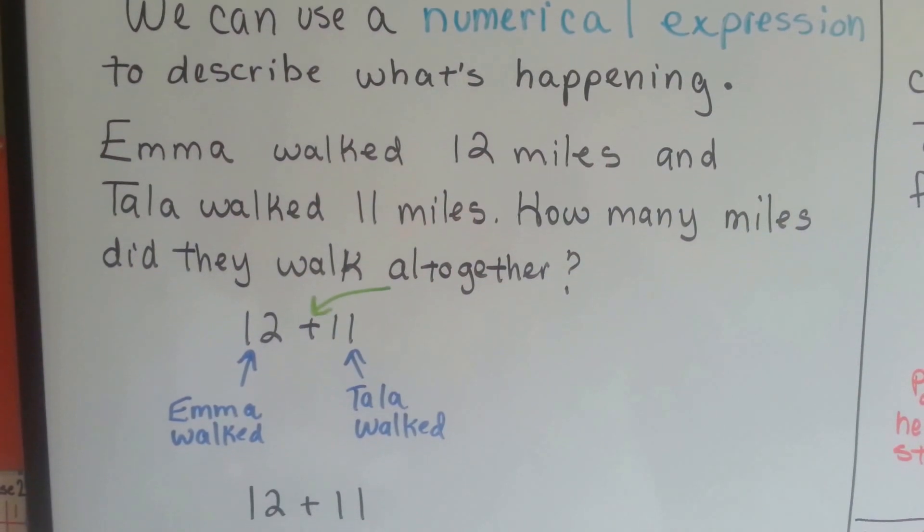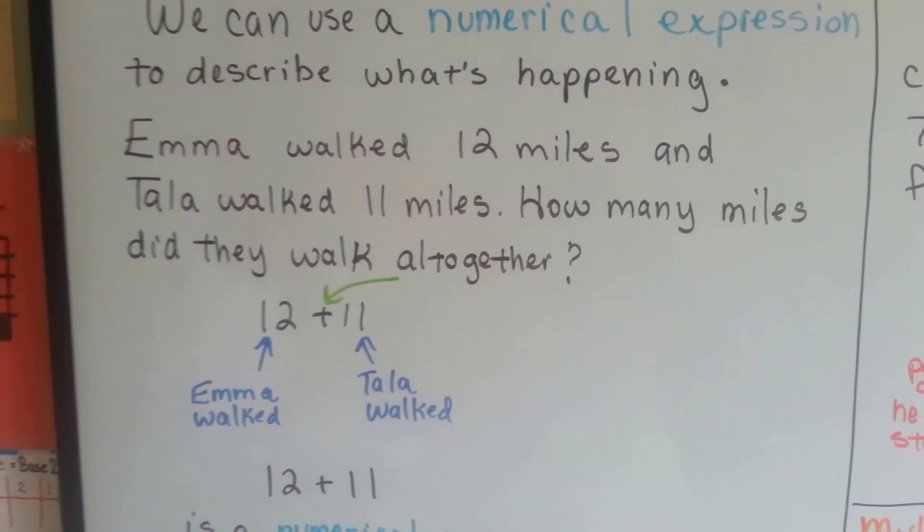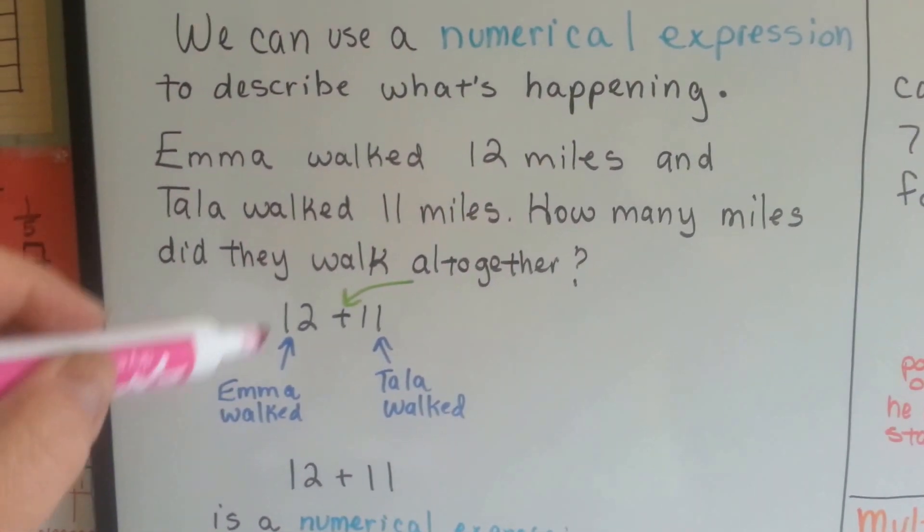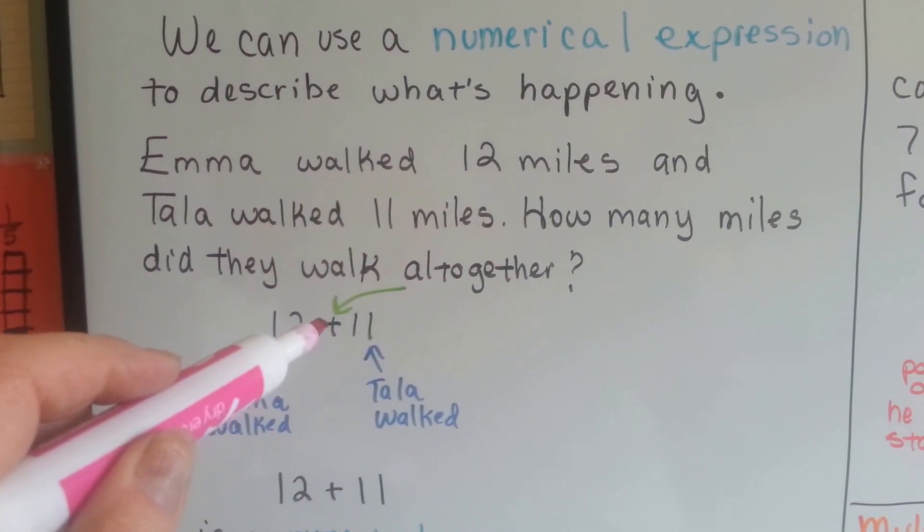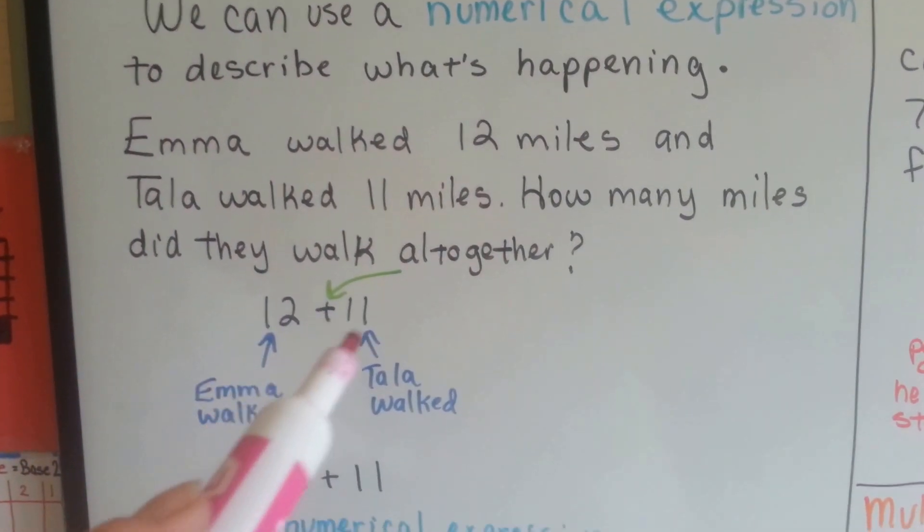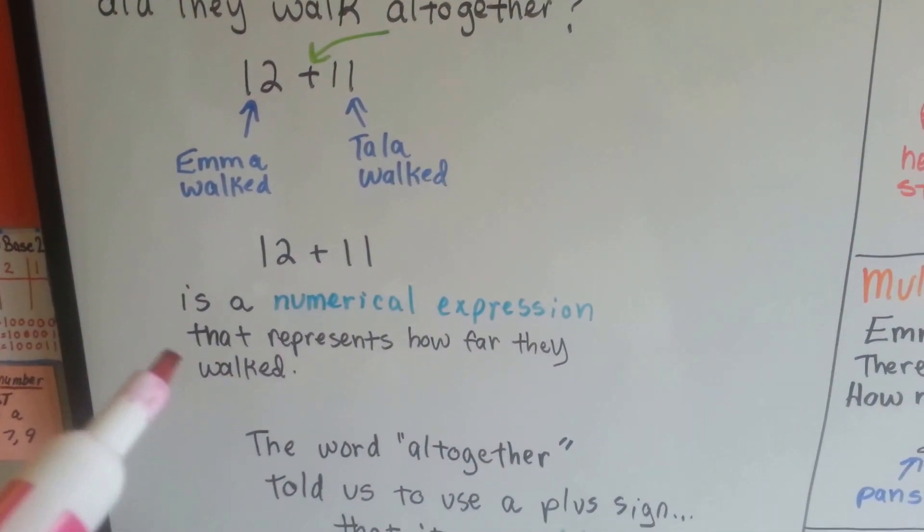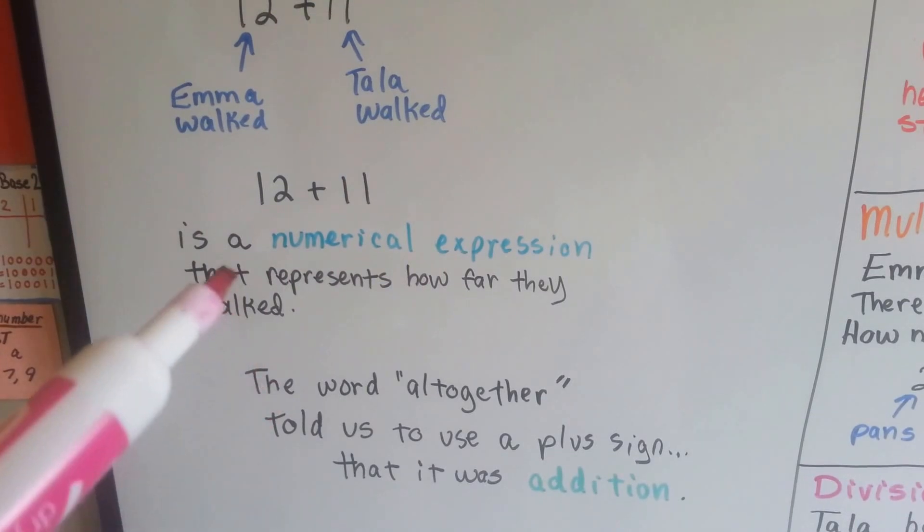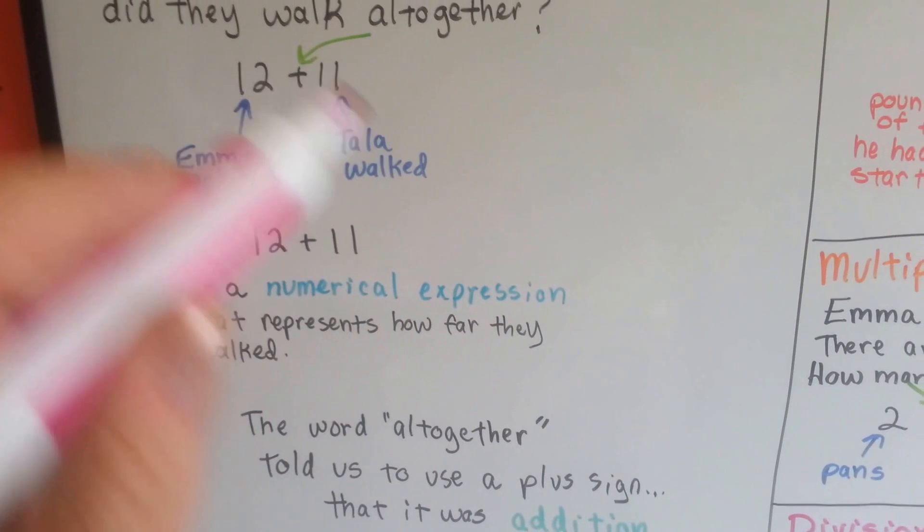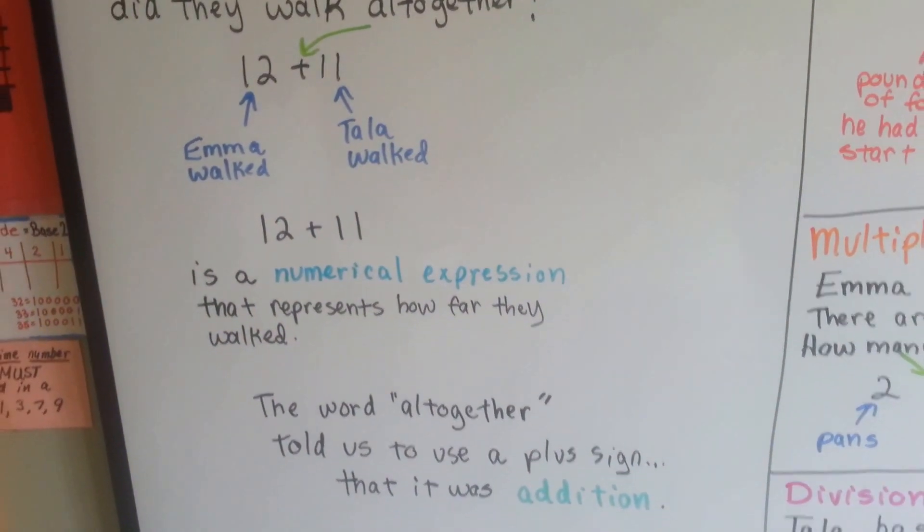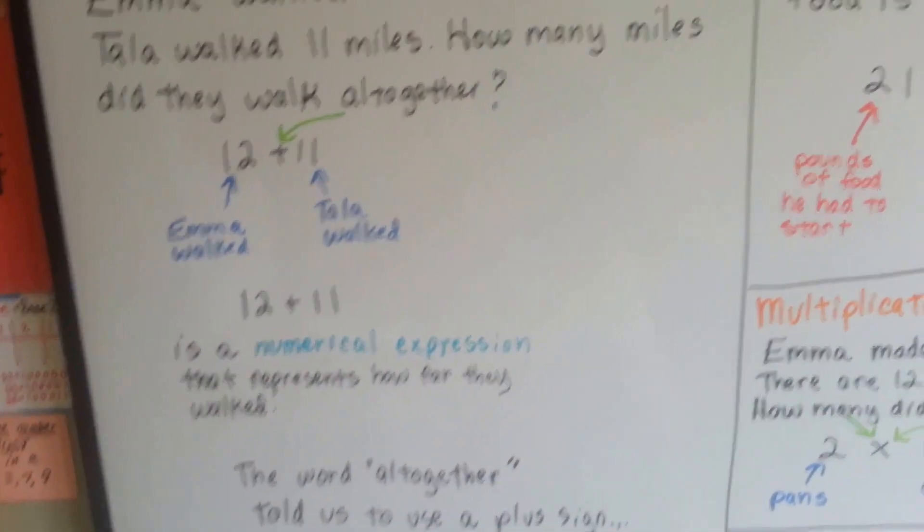Emma walked 12 miles and Tala walked 11 miles. How many miles did they walk altogether? Emma walked 12, Tala walked 11. The word altogether tells you that it's a plus sign, so we have 12 plus 11. 12 plus 11 is a numerical expression that represents how far they walked. The word altogether told us to use a plus sign and that it was addition. But there's no equal sign. See that? It's just telling the story of what happened. Emma walked, Tala walked, okay?